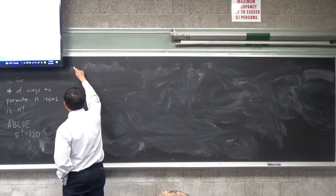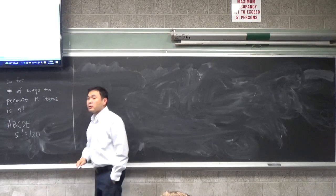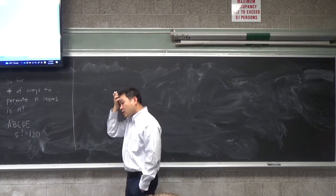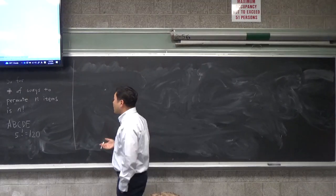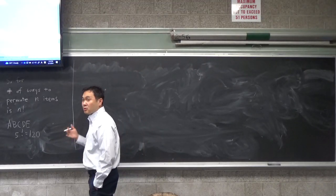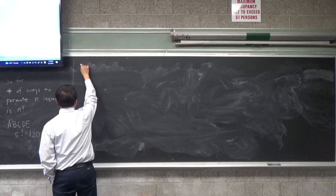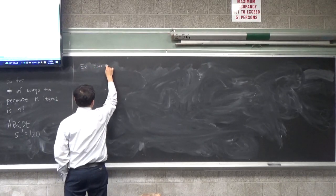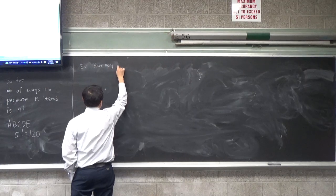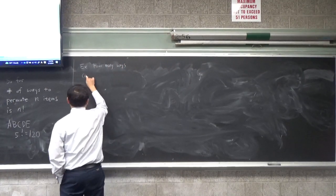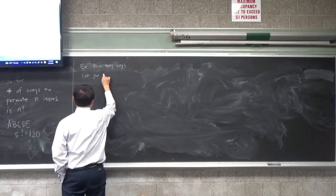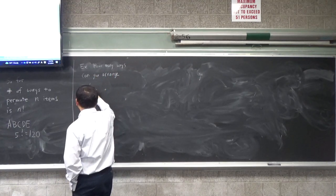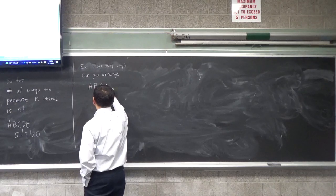Today I want to talk about permutations with repetitions. So if you have things that repeat, how many ways can you shuffle them? For example, here's the question: how many ways can you arrange a, b, c, c?